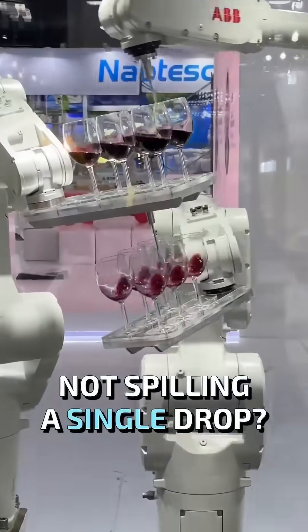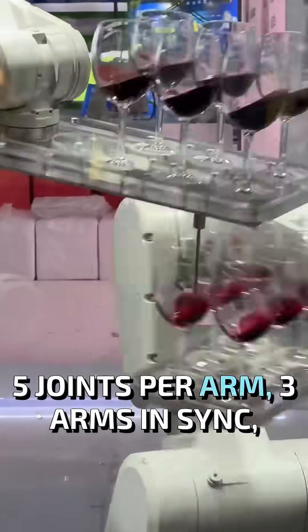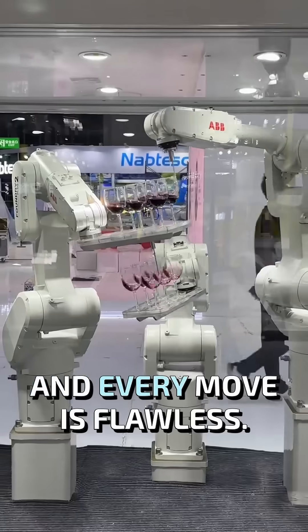How the hell are these robots not spilling a single drop? Five joints per arm, three arms in sync, and every move is flawless?